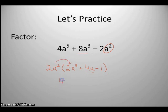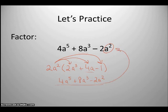That gives you 2a squared times 2a cubed. That gives you 4a to the 5th. 2a squared times a positive 4a. That gives you a positive 8a cubed. And 2a squared times negative 1 gives you a negative 2a squared. So when I redistribute, I get what I started with, so I know my answer is correct.